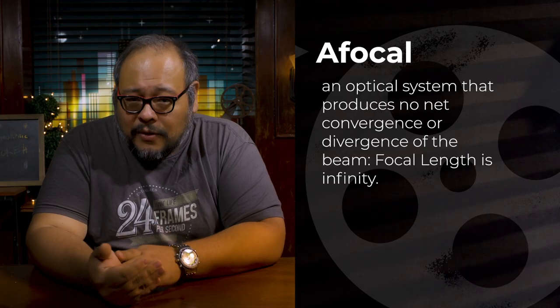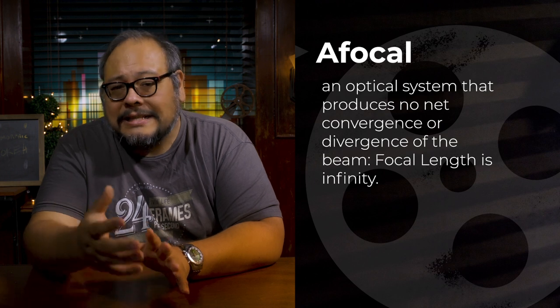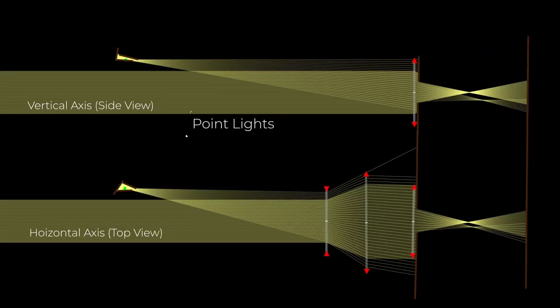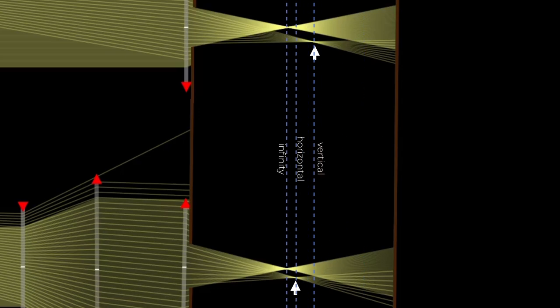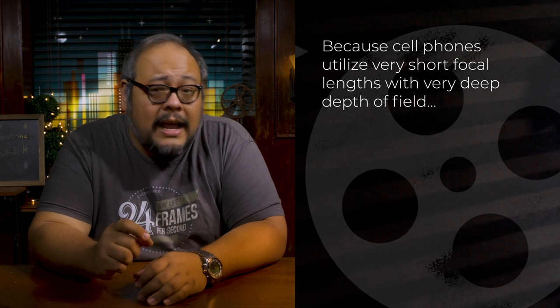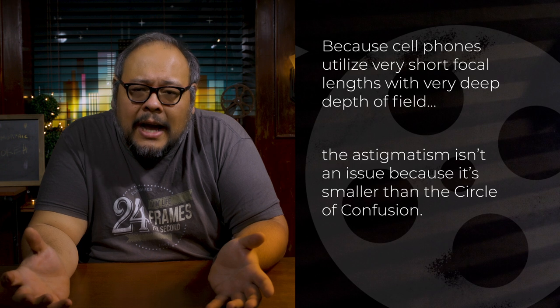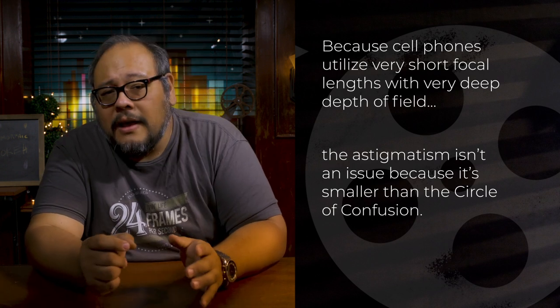So that explains cell phone anamorphic lenses — they are set to focus at infinity, which makes the anamorphic element afocal, meaning it has no focal length (or a focal length of infinity). The problem with that is any light coming from closer than infinity will result in some astigmatism on the focus plane. For cell phones with incredibly small focal length lenses and very deep depth of field, that's really not an issue — the astigmatism is smaller than the circle of confusion. But that won't work on a larger format, and we still haven't gotten to oval bokeh yet.